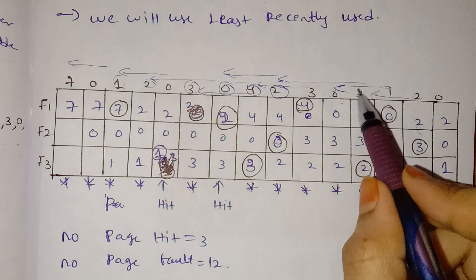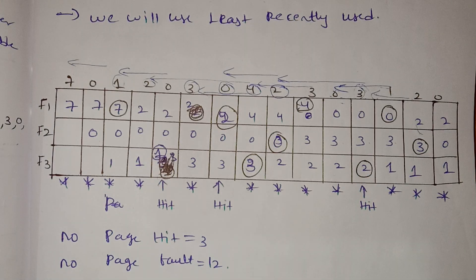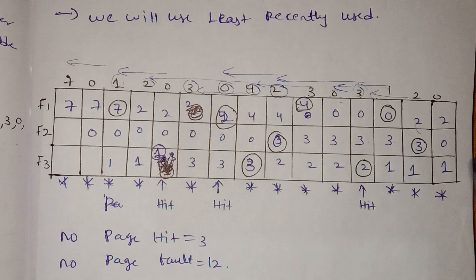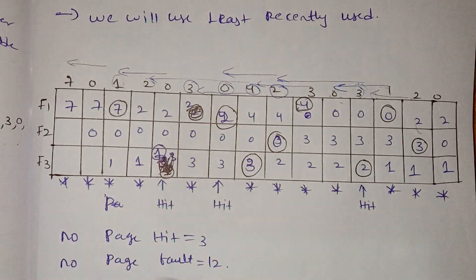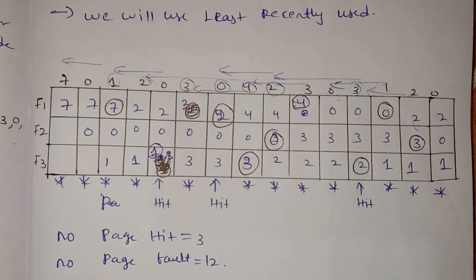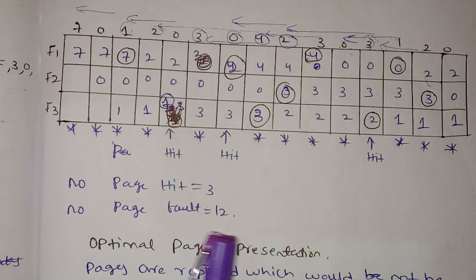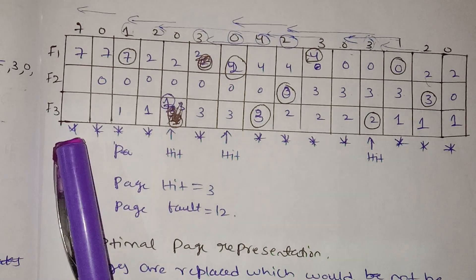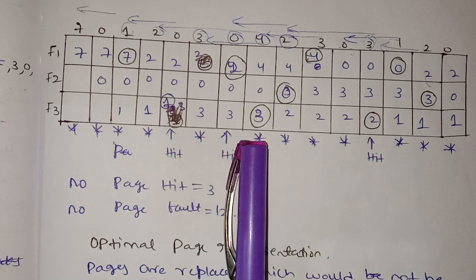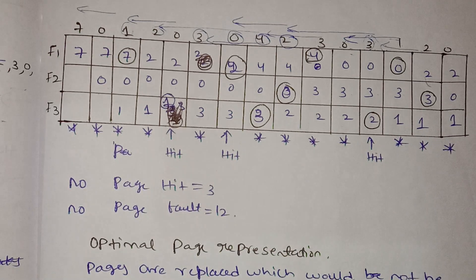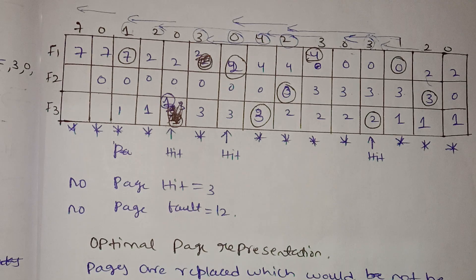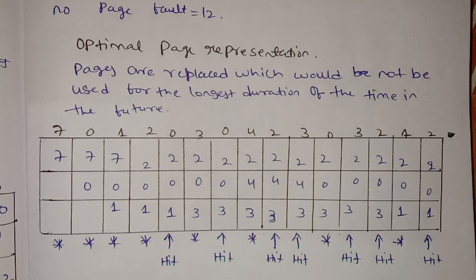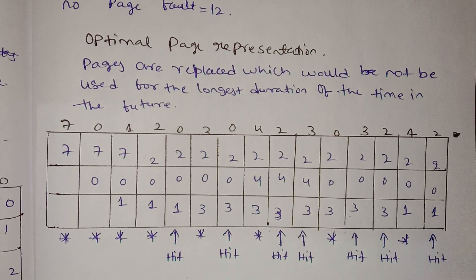For LRU, remove 3 and then remove 0, then replace. The total number of hits is 1, 2, 3, and the number of page faults is 1 through 12 — so 12 page faults.